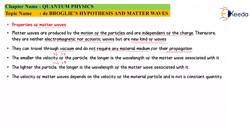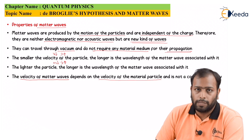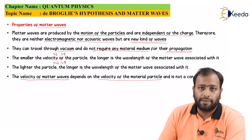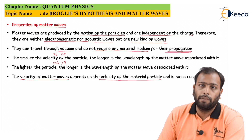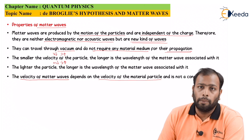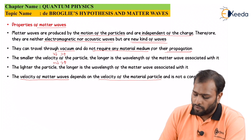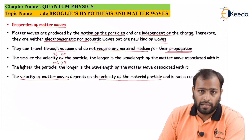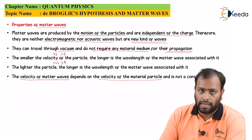The velocity of matter waves depends on the velocity of the material particle and is not a constant quantity. To understand this: just as the speed of sound is determined by the medium — maximum in solid, minimum in gas — similarly, my velocity can be different in different environments, and hence the matter wavelength depends on the medium in which I am traversing.